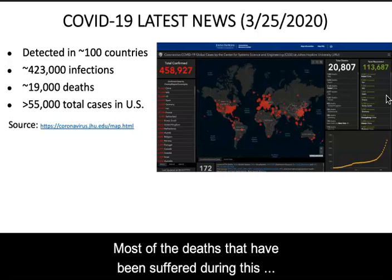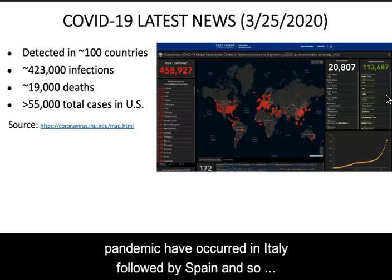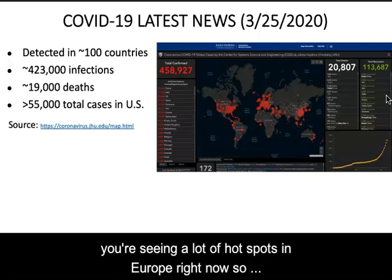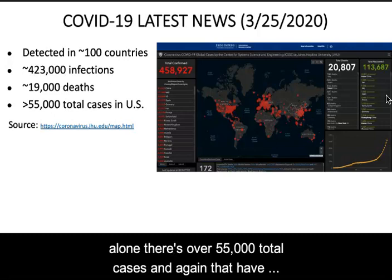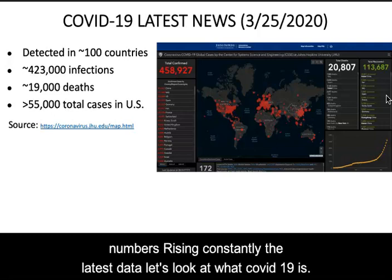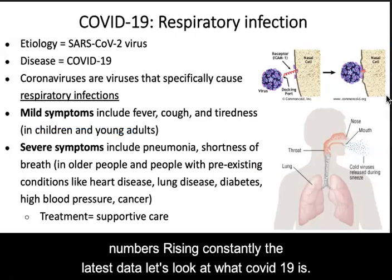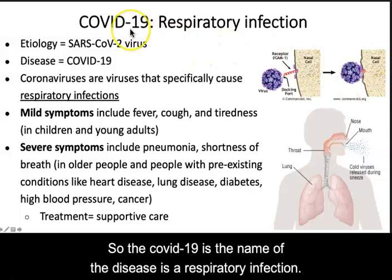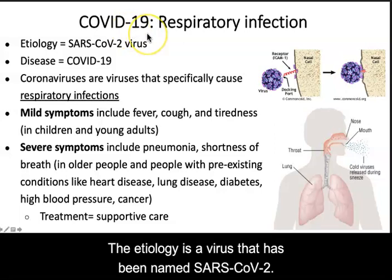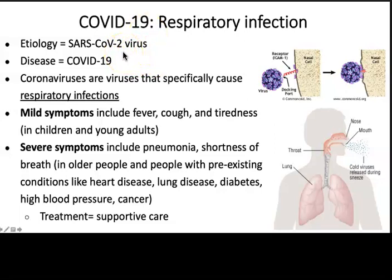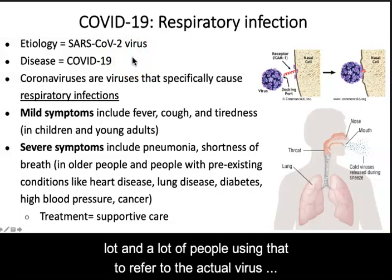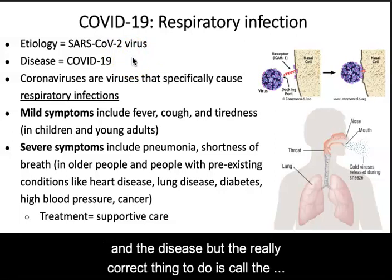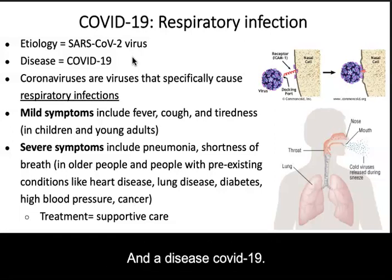Most of the deaths that have been suffered during this pandemic have occurred in Italy, followed by Spain, so you're seeing a lot of hotspots in Europe right now. We are in the midst of an outbreak — in the United States alone there are over 55,000 total cases, and that number is rising constantly. COVID-19 is the name of the disease; it's a respiratory infection. The etiology is the virus that has been named SARS-CoV-2. In the press it's called COVID-19 a lot, but the correct thing to do is call the virus SARS-CoV-2 and the disease COVID-19.